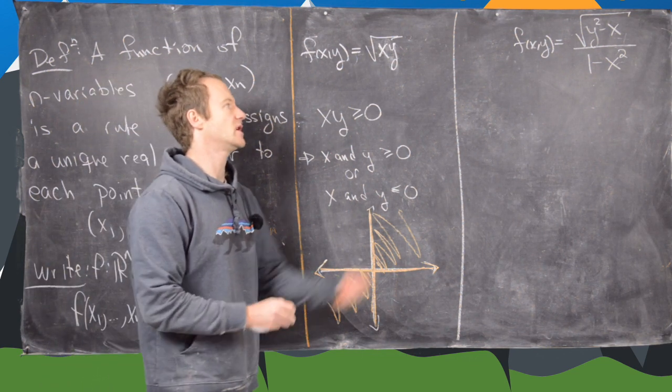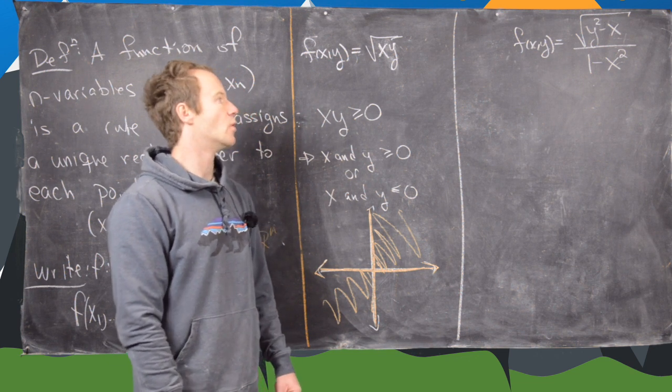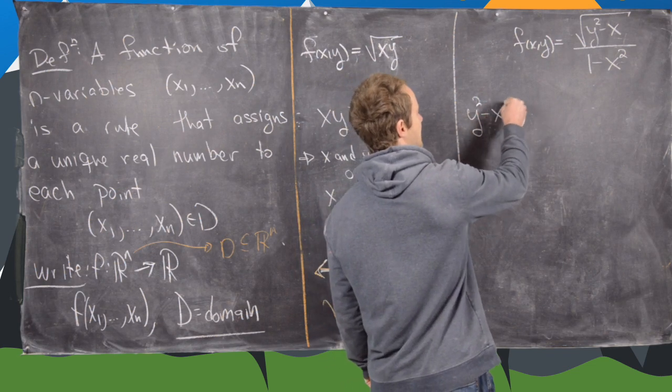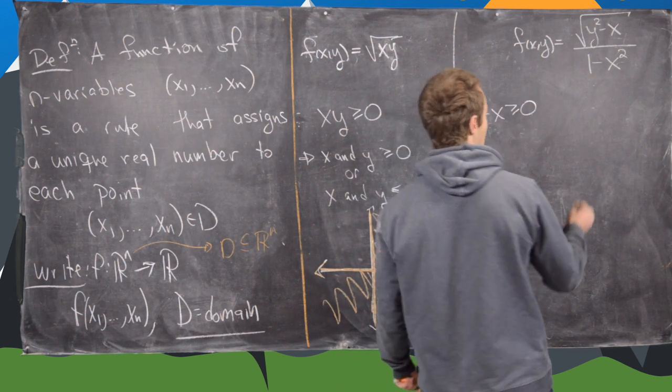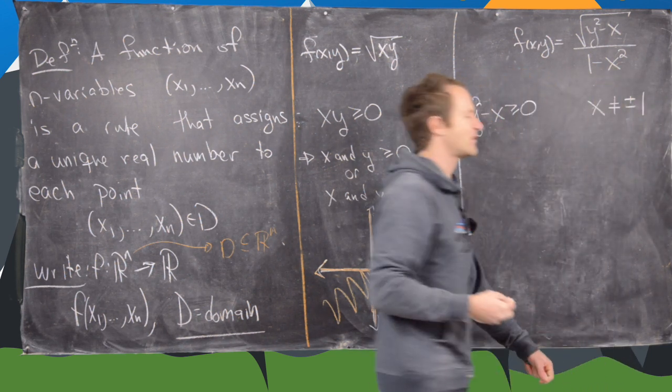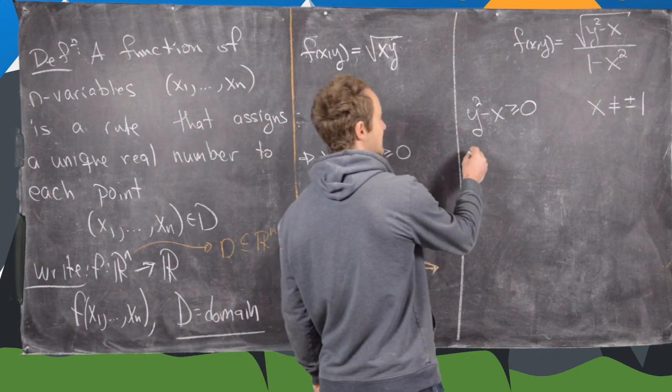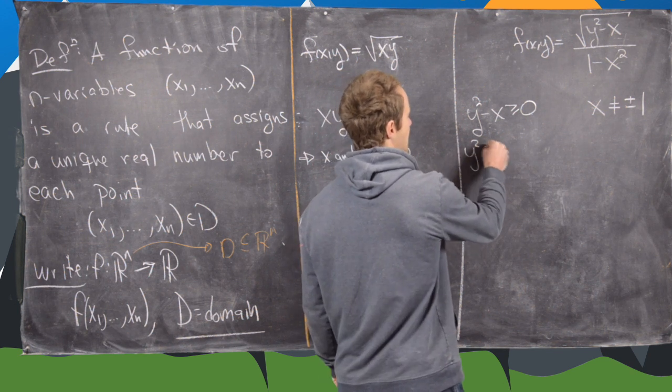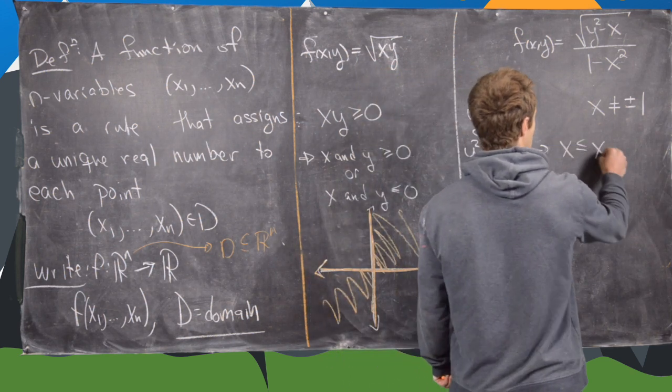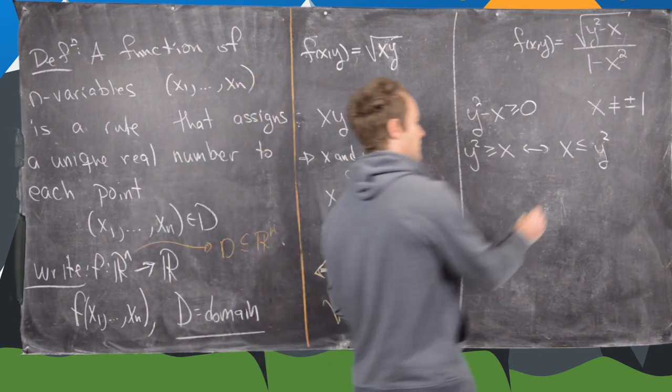Now let's look at this next one. We have f of xy is the square root of y squared minus x over 1 minus x. There are two things going on here. We need y squared minus x to be bigger than or equal to zero, and we need x to not be equal to plus or minus one. I've gone ahead and solved that for zero in the denominator. So this gives us y squared is bigger than or equal to x, which is maybe better written as x is less than or equal to y squared.